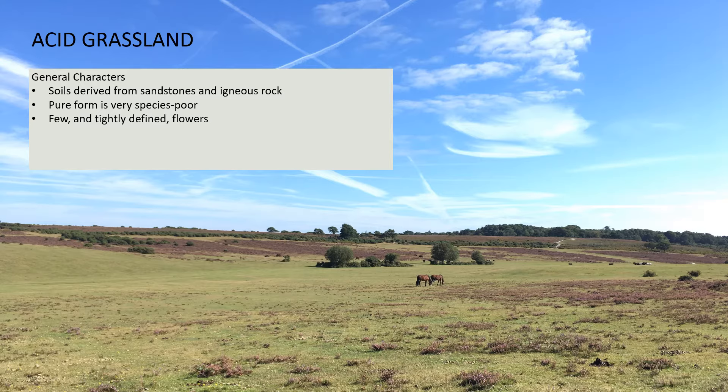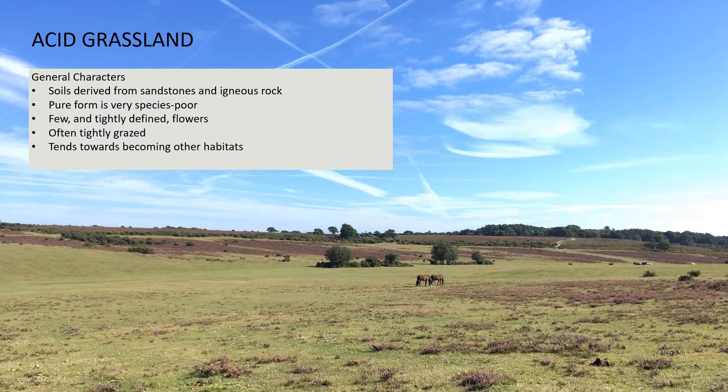It's very prone to damage — historically a lot of it has been limed to raise the pH and make it more productive, and a fair bit has been ploughed up. But mostly it will only survive when very tightly grazed. If grazing stops, it tends towards becoming heathland, scrub, or gorse. It needs to be kept at that low level, so in a way it's a very artificial habitat, although it tends to occur in quite wild, unenclosed places like large commons.